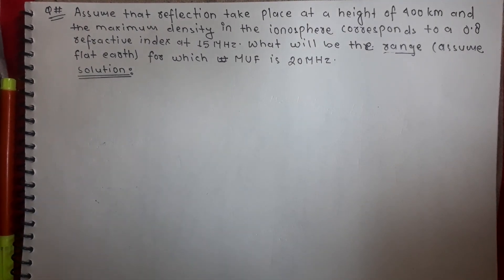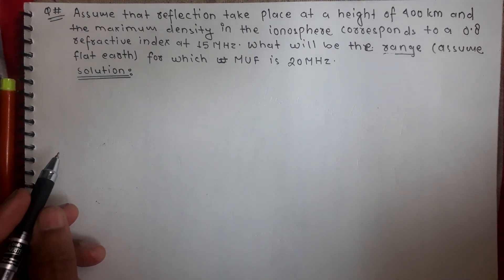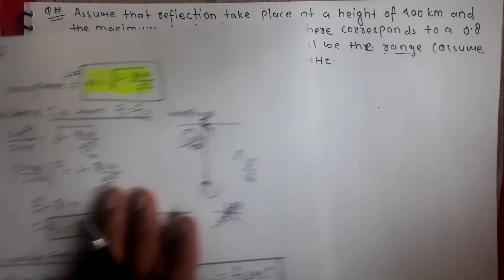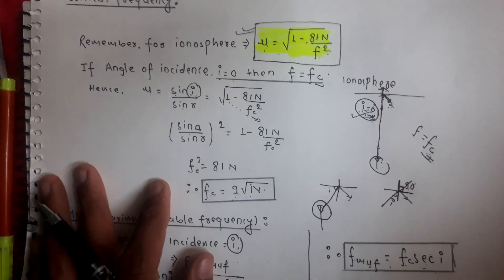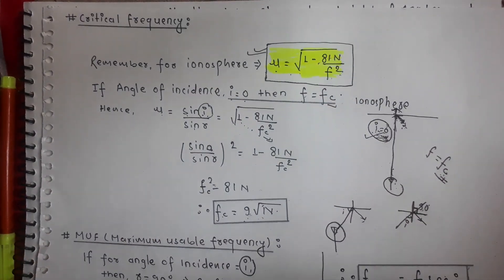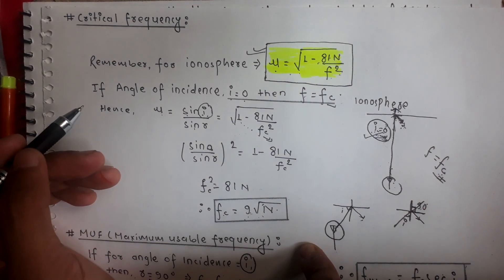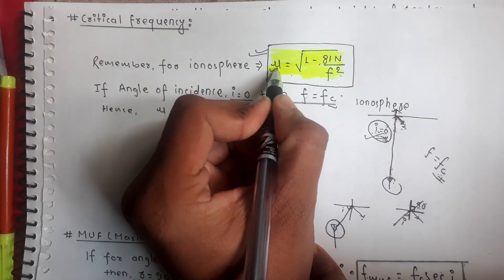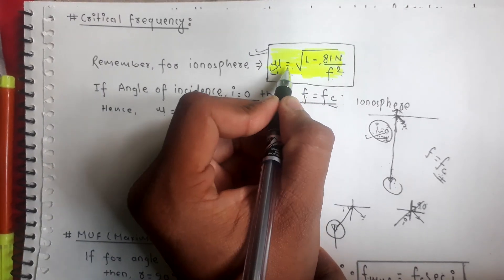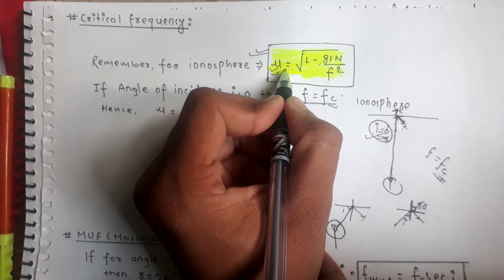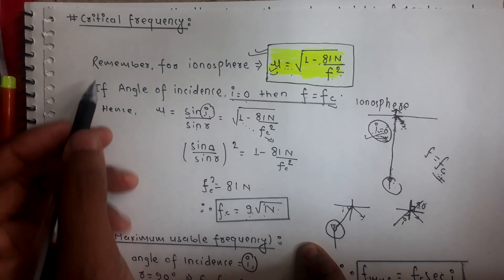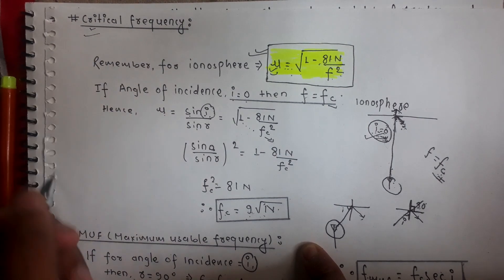Hello friends, today we are going to deal with the problem related to skip distance. Do you know what skip distance is? Before understanding skip distance, we are going to cover two parameters: critical frequency and maximum usable frequency. First, I would like to remind you of this formula — this is the refractive index of the ionosphere. You need to remember this; if you want to learn more about it, I will make another video — you can comment below.